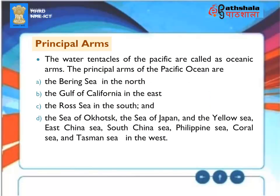Principle Arms: The water tentacles of the Pacific are called Oceanic Arms. The principle arms of the Pacific Ocean are the Bering Sea in the north; the Gulf of California in the east; the Ross Sea in the south; and the Sea of Okhotsk, Sea of Japan, Yellow Sea, East China Sea, South China Sea, Philippine Sea, Coral Sea, and Tasman Sea in the west.